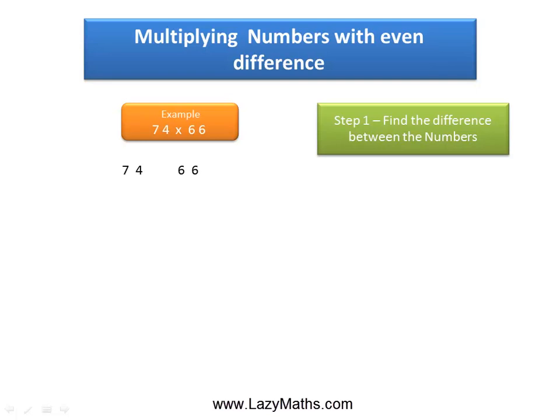The first step involves finding the difference between these two numbers, 74 and 66. 74 minus 66 equals 8.